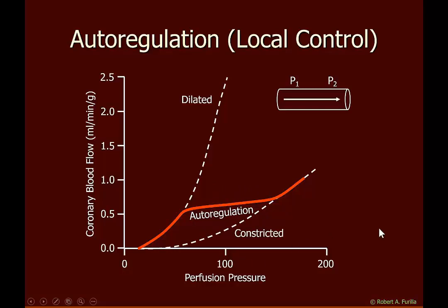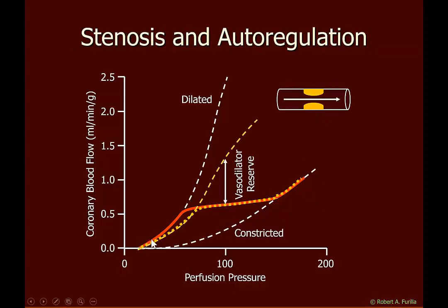If I place an obstruction in the vessel, the maximally dilated vessel now shows a much less steep curve that also curves off sooner. We still find a point at which the system autoregulates, and then we see the maximally constricted region. This also leaves us with less vasodilator reserve — the system cannot vasodilate as well as an open system because the obstruction simply cannot allow blood flow to pass through at the same rate that would occur without the obstruction.